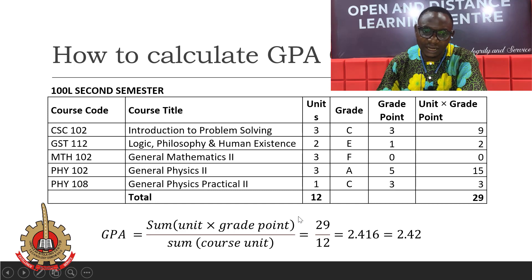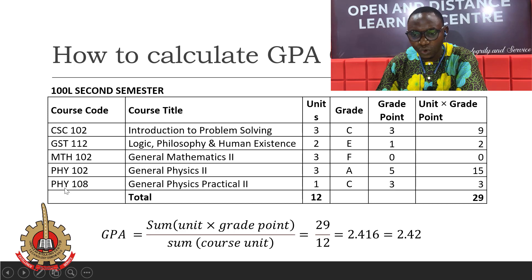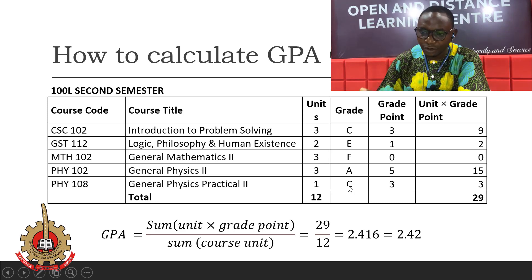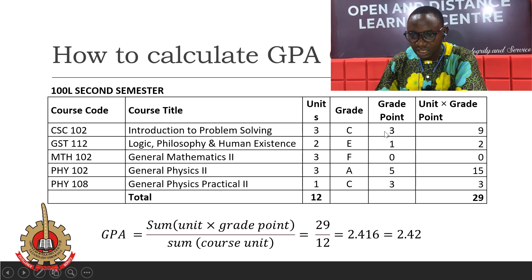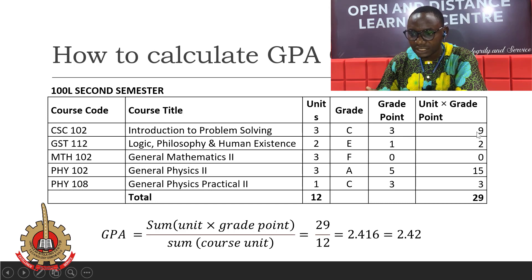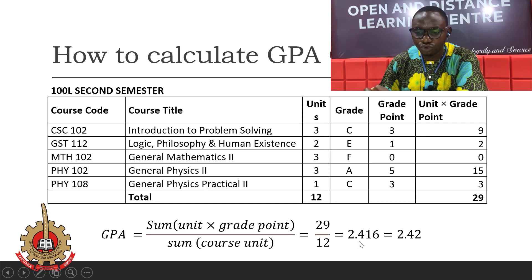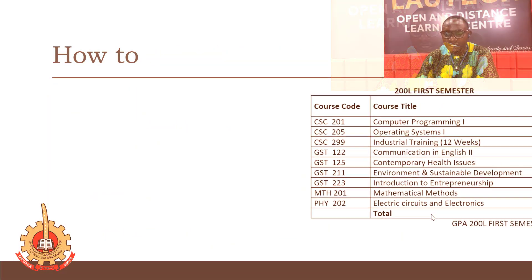Let's do the same for 100 level second semester. You registered for CSE 102, GST 112, MTH 102, PHY 102, and PHY 108. Your grades are out — you have C, E, F, A, and C. You allocate grade points: C is 3, E is 1, F is 0, A is 5, C is 3. Multiplying units by grade points gives the product values. Summing everything gives 29, and the total units registered is 12. Applying the formula: 29 divided by 12 equals 2.416, which rounds to 2.42. That is your GPA for 100 level second semester.